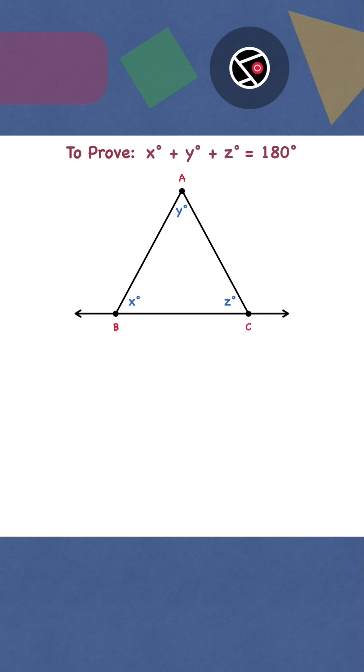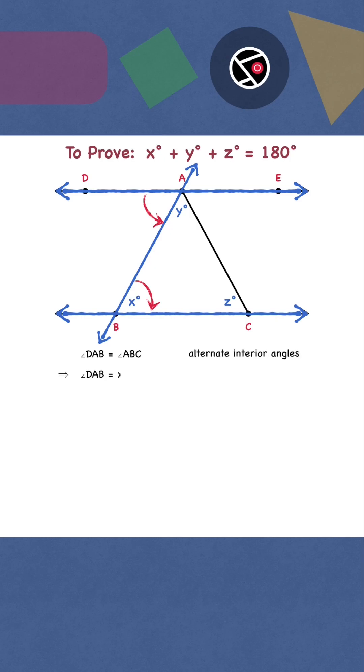Extend BC in both directions. Draw DAE parallel to BC. DE is parallel to BC and AB is the transversal. Angle DAB equals angle ABC. Alternate interior angles are equal. Angle DAB equals x degrees.